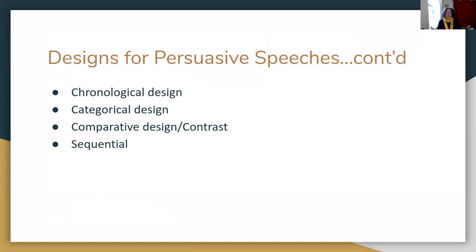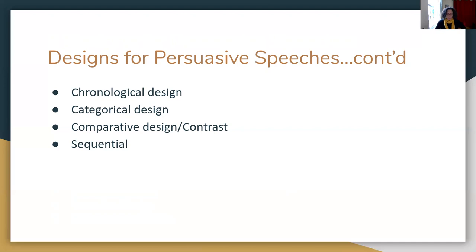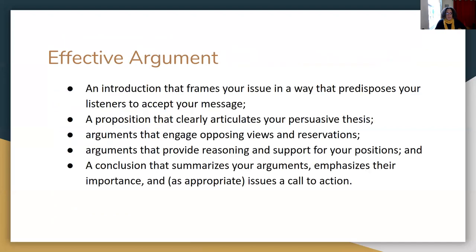The seventh design is comparative or contrast design, where you compare and contrast two things — the positives and negatives of both. The eighth is sequential design, which is different from chronological in that sequential is step by step, not necessarily based on time — this happened, and because of that this happened, and because of that this happened.